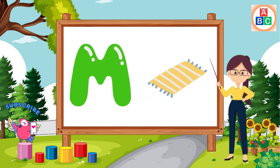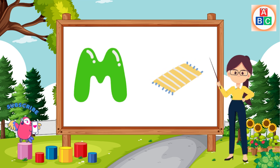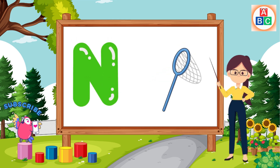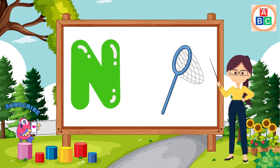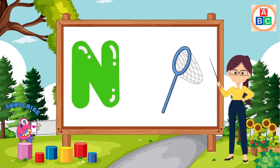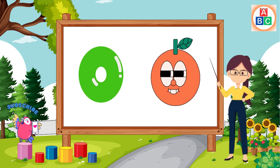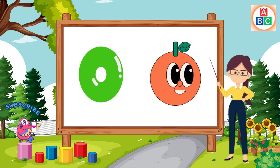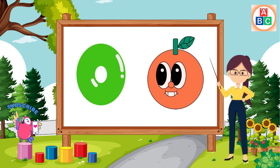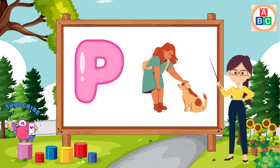M is for mat, m-m-mat. N is for net, n-n-net. O is for orange, o-o-orange. P is for pet, p-p-pet.